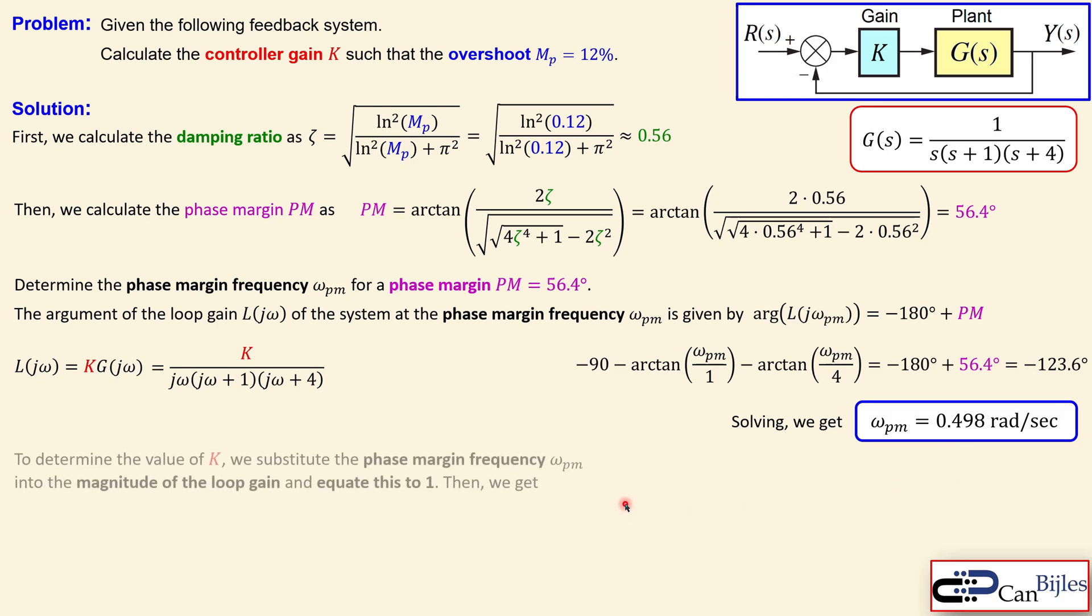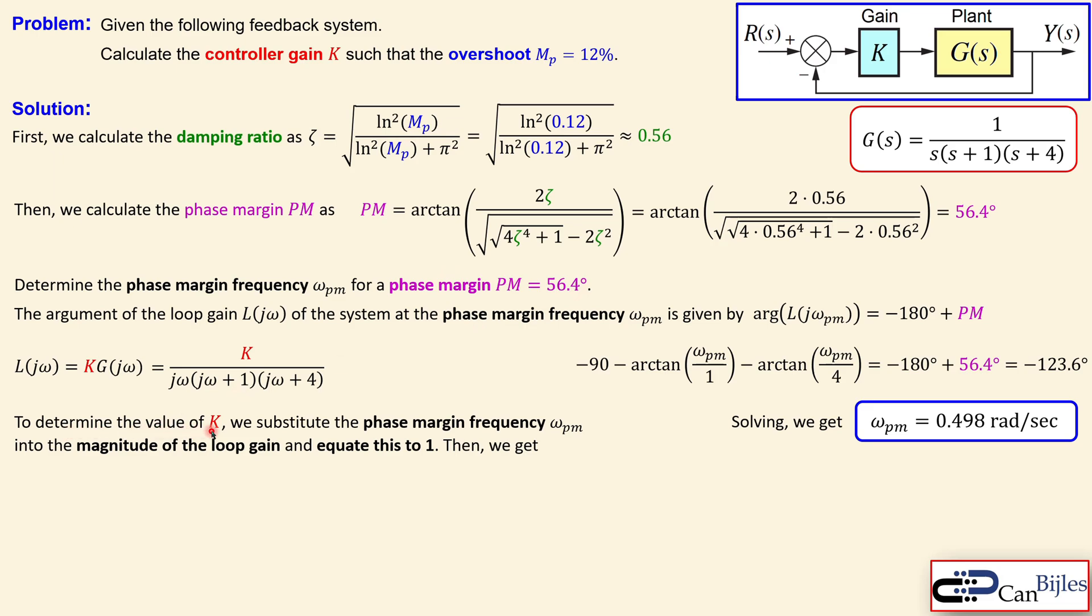The next step is to determine the K value by making the loop transfer function, the loop gain, the absolute value of that at that specific frequency equal to one. That is the condition for the phase margin calculations. You get the absolute value of K over the complete thing in the denominator. But we know the phase margin frequency. So we can calculate K now by substituting the values and then rewrite this. You get K of 2.245.